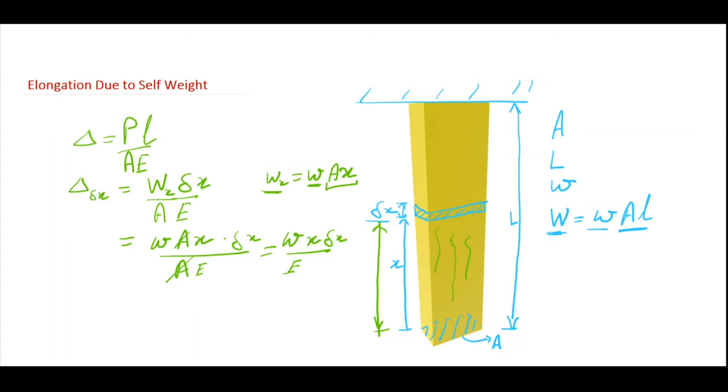So now if I want to find out extension of the whole rod, that will be integration from 0 to L. So here integration is of x. X is 0 here, and as I move up I am moving this element from 0 to the length top.